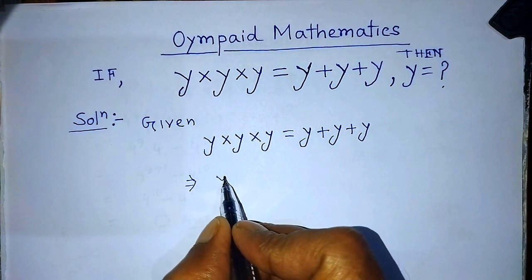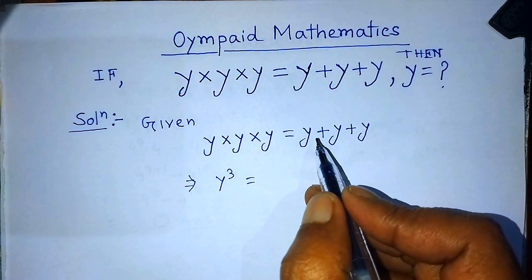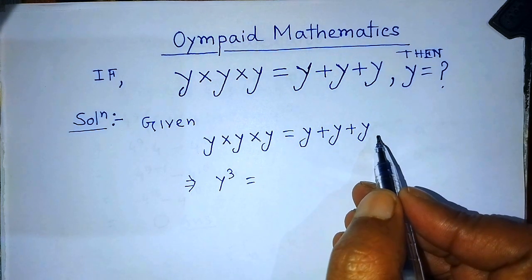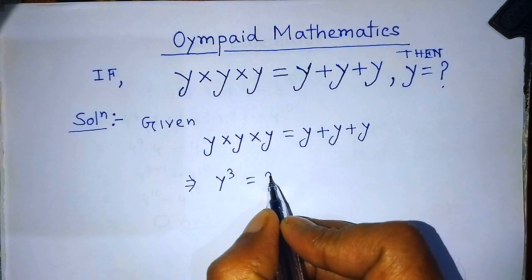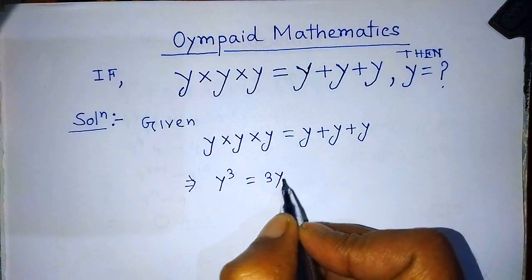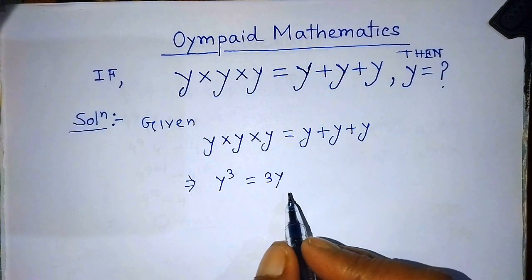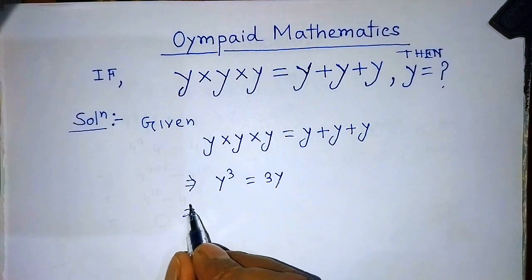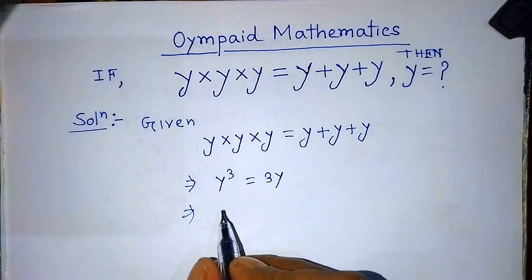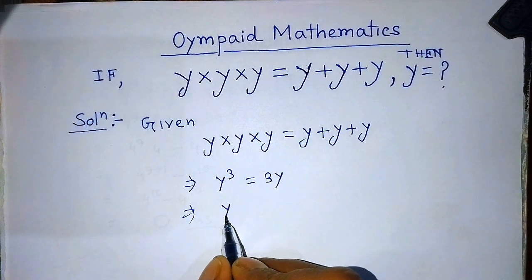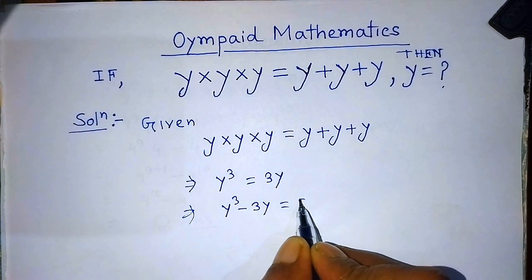So we can write y to the power 3 on the left hand side. And on the right hand side, here is y plus y plus y — if you add y three times, then you get 3y. So we have to write 3y on the right hand side. To find the value of y, we transpose 3y to the left hand side, giving us y to the power 3 minus 3y is equal to 0.